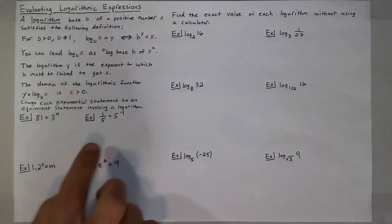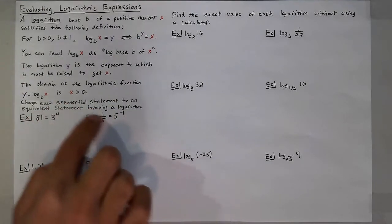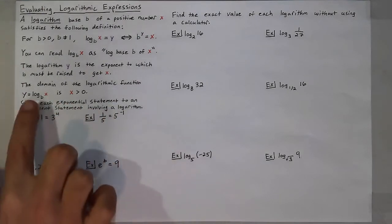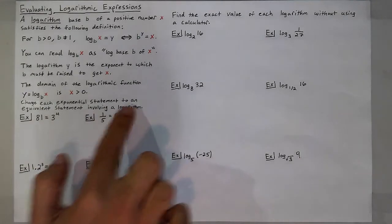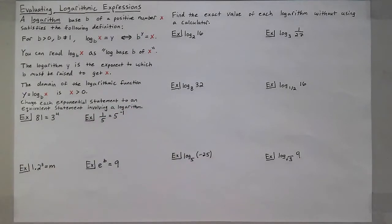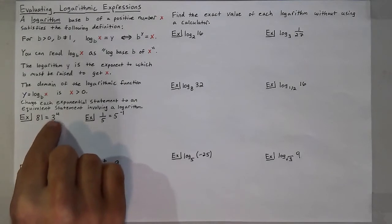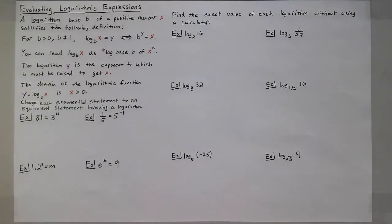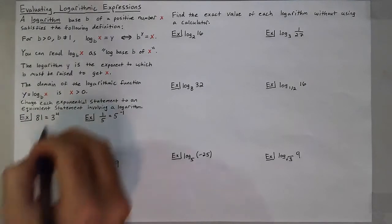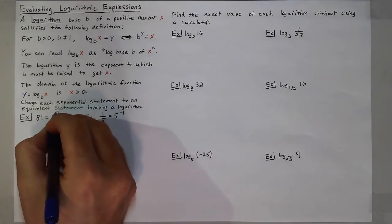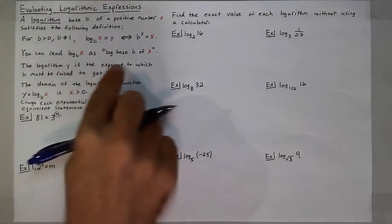Let's look at a few exponential statements to understand how logarithms work. We're going to change each exponential statement to be an equivalent statement involving a logarithm. If we have 81 is equal to 3 to the 4th, a true statement, in logarithmic form, the logarithm is equal to that exponent because it is the exponent.